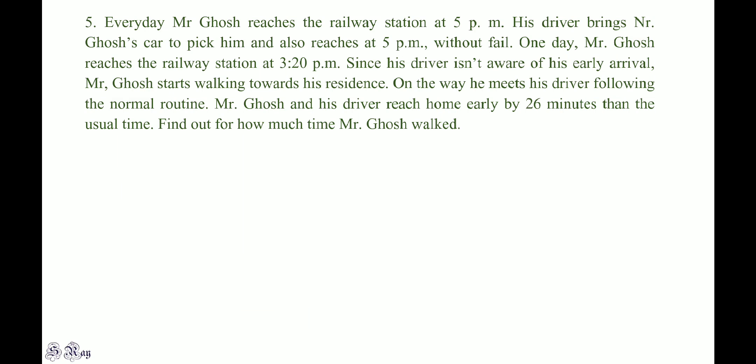Every day Mr. Goss reaches the railway station at 5 p.m. and his driver also arrives at 5 p.m. to pick him up. One day Mr. Goss reaches at 3:20 p.m. Since the driver is unaware of his early arrival, Mr. Goss starts walking towards his residence. On the way he meets the driver following the normal routine, and they both reach home 26 minutes early. Find out how much time Mr. Goss walked. The answer is 1 hour 27 minutes.